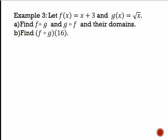Let's look at an example. In order to do compositions, you have to have two functions. Here, f(x) = x + 3 and g(x) = √x. We're going to do it in each direction because order matters — this is not a commutative operation. In general, f∘g and g∘f are going to be different functions. We'll also look at their domains, which emphasizes that they are different functions.